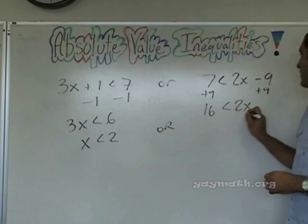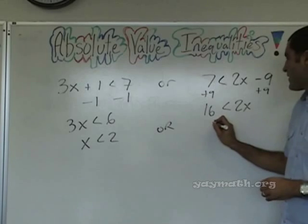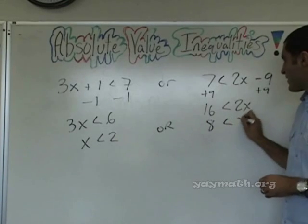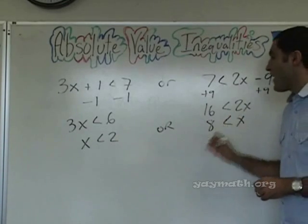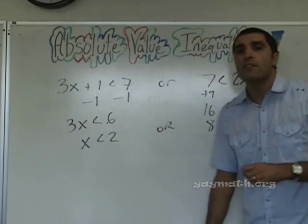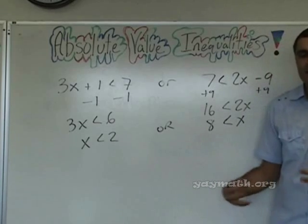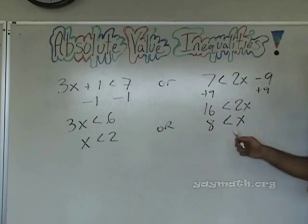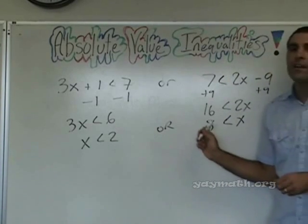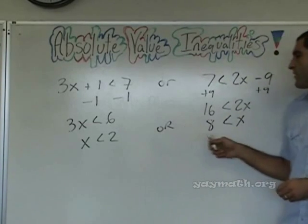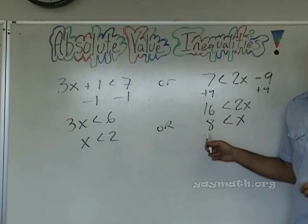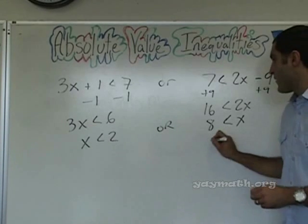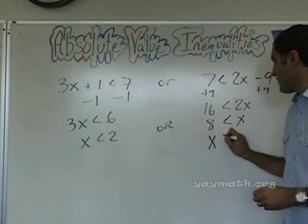Divide by 2, so that's 8 is less than x. Preferably, while we're learning, get in the habit of bringing the variable to the left. So this would be x greater than 8 — yes sir.